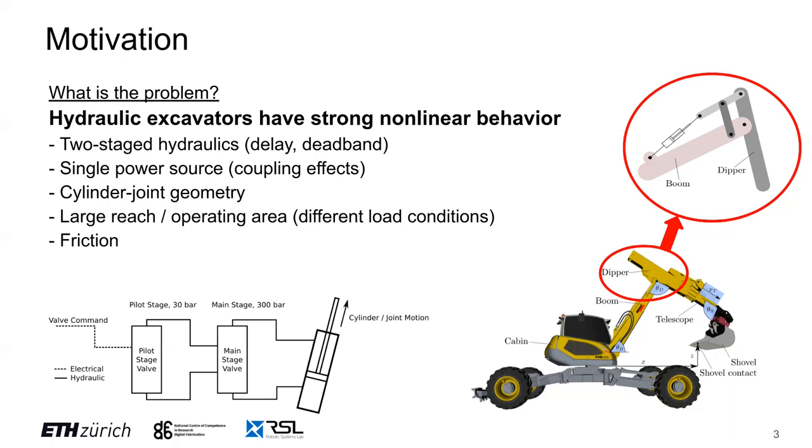The conversion from linear piston to rotational joint motion through linkage mechanisms, such as the one shown in the red circle, is highly nonlinear. This conversion can be solved geometrically, but it is cumbersome and needs to be derived for every joint separately.